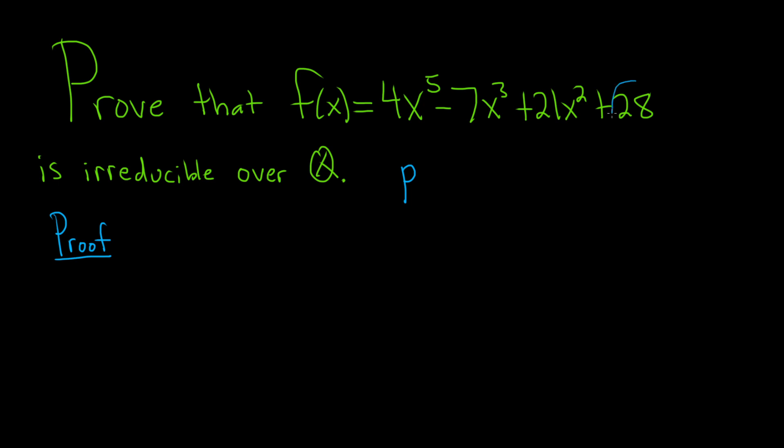That prime number divides this one here, this one here, and this one here, but it does not divide this one. And we also have the condition that p squared does not divide the constant term—I'll just say a sub 0. Then the polynomial is irreducible over the rationals.